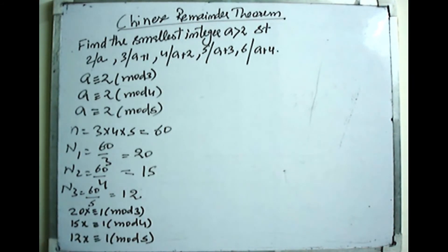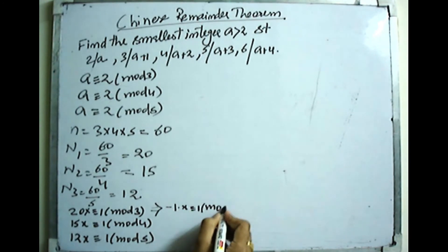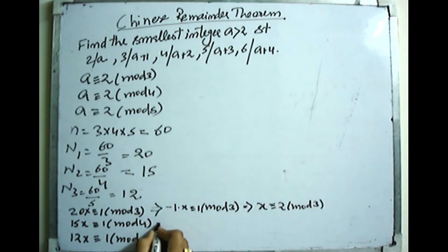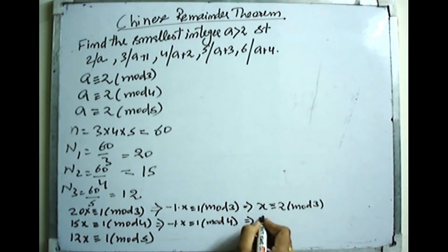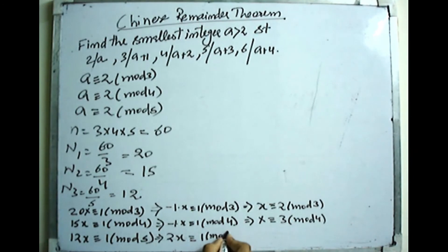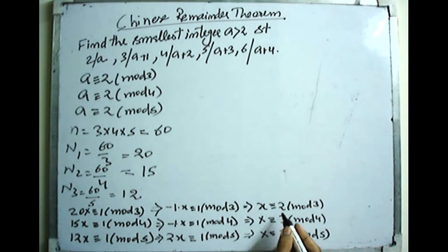The second congruence is 15x ≡ 1 mod 4, and the third is 12x ≡ 1 mod 5. Solving: 20 mod 3 = −1, so −x ≡ 1 mod 3, giving x1 ≡ 2 mod 3. For the second: 15 mod 4 = −1, so −x ≡ 1 mod 4, giving x2 ≡ 3 mod 4. For the third: 12 ≡ 2 mod 5, so 2x ≡ 1 mod 5; multiplying by 3 gives x3 ≡ 3 mod 5.